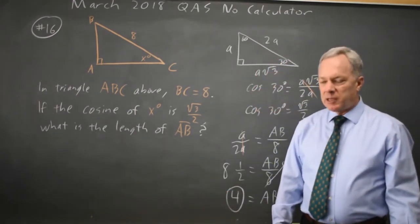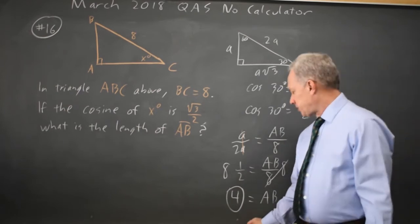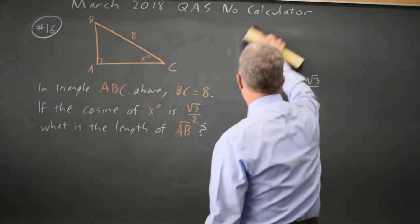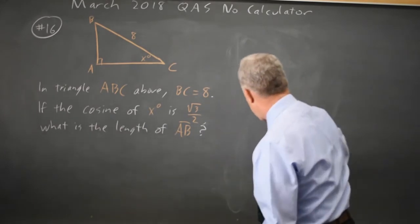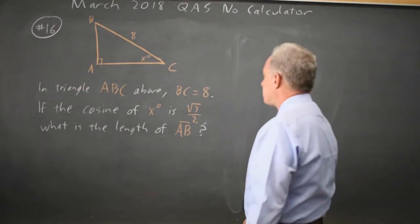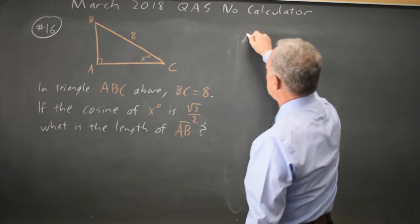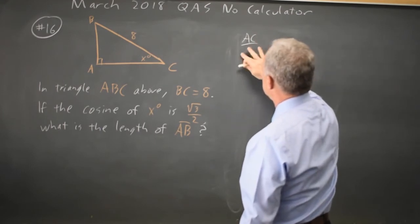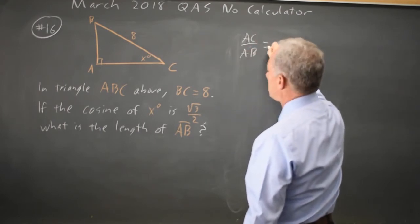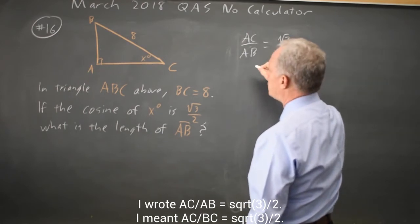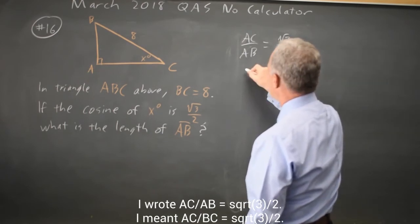If you don't happen to recognize that this is a special right triangle, we can also write AC over AB equals root 3 over 2. And we know that AB is 8.